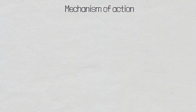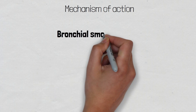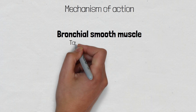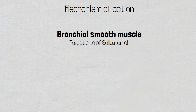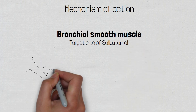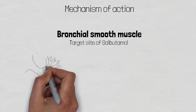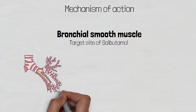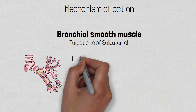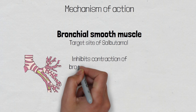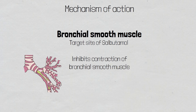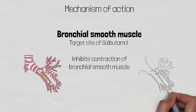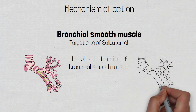Organs where beta-2 receptors are present include the bronchial smooth muscle, which is the target site of salbutamol. When salbutamol binds to beta-2 receptors in bronchial smooth muscle, it causes an intracellular cascade that inhibits contraction of the muscle fibres. This leads to relaxation of the bronchial smooth muscle and stops any bronchospasm that the patient may be experiencing, such as in asthma attacks or anaphylaxis.